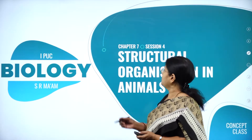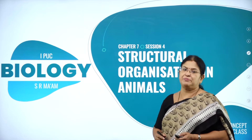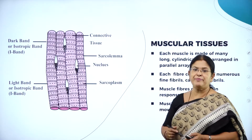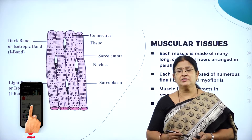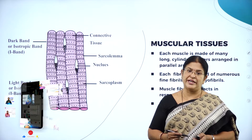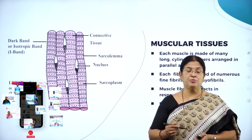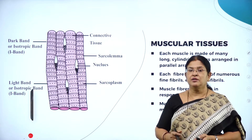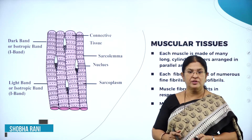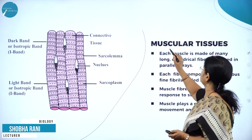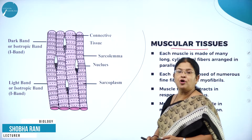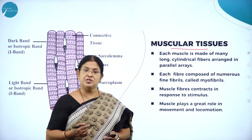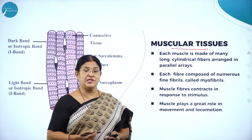Hello everyone, welcome back to session 4 of this chapter called Structural Organization in Animals. Hope you remember in the last session we learnt about a very important tissue called connective tissue. We learnt about bone, we learnt about cartilage and blood. Moving on to the third very important type of animal tissue — that is muscular tissue. In the last session we also studied about blood.